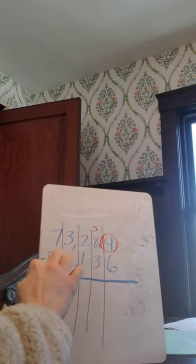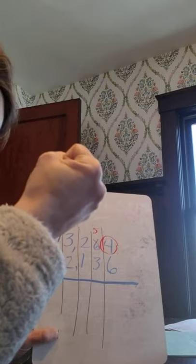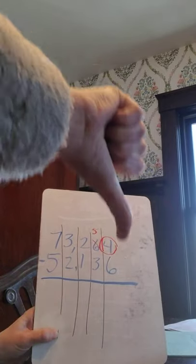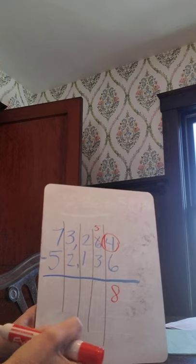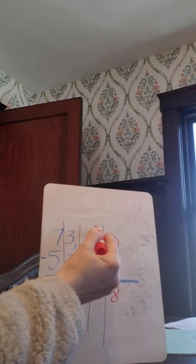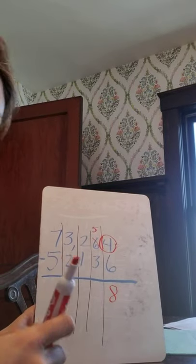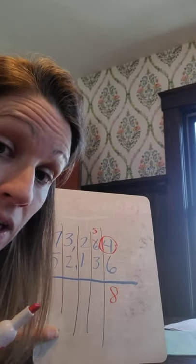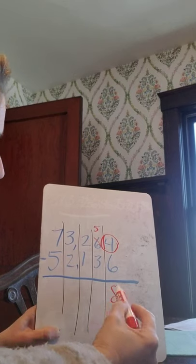All right. So 14 take away six, put 14 in my hand and I'm going to count down six. 14, 13, 12, 11, 10, 9, 8. I landed on eight. Now I have five take away three, which is really 50 take away 30, but I'm just going to simplify it and do five take away three. Five, four, three, two. I took three away and I got two.